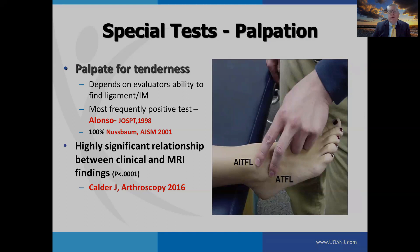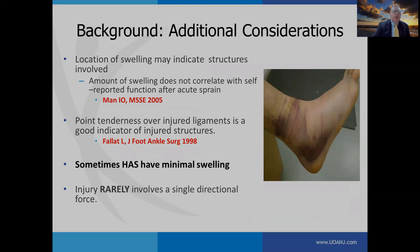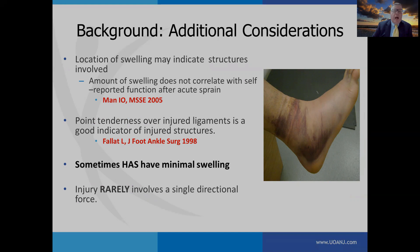When evaluating the high ankle sprain clinically, one of the most important tools is palpation. Alonzo found it was the most frequently positive test, but it depends on the evaluator's ability to find the ligament. Calder found a highly significant relationship between palpation and MRI findings. Regarding swelling, it may indicate structures involved, but the amount of swelling doesn't always correlate with self-reported function after an acute sprain. Point tenderness over an injured ligament is a good indicator of injured structures, but high ankle sprains may have minimal swelling.